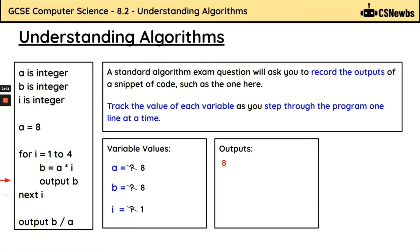Next I — we increase I to 2 and go back to the loop. We check if it is more than 4 and it is not, so we continue. B equals A times I: A is 8, I is 2, so 8 times 2 is 16. B is now 16, and we output that value, 16.